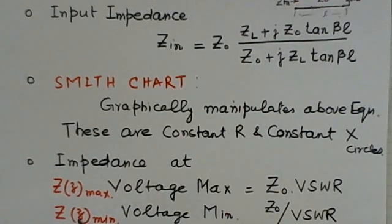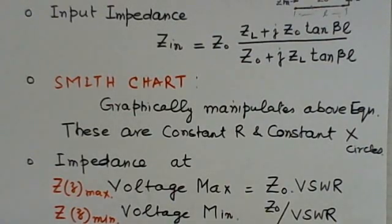Now, if we are given impedance at Z at voltage maximum, that means maximum impedance at the voltage maximum is known, you can also find the value to be Z0 into VSWR. And at voltage minimum, the value of Z minimum is Z0 over VSWR. This would be more clear when we discuss problems on these equations.